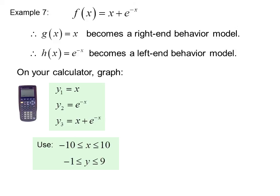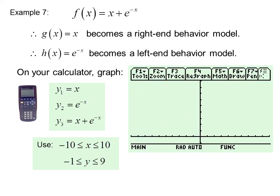On your calculator, graph y1 equals x, y2 equals e to the negative x, and y3 equals x plus e to the negative x, using a window of negative 10 to 10 for x and negative 1 to 9 for y. Notice that the combined function follows y equals e to the negative x from the left, because that is the left-end behavior model, and it follows y equals x to the right, because that is the right-end behavior model.